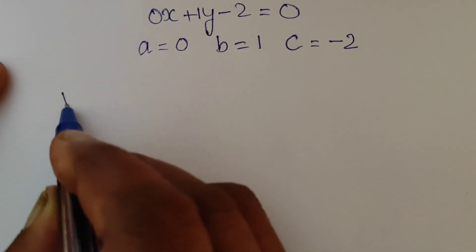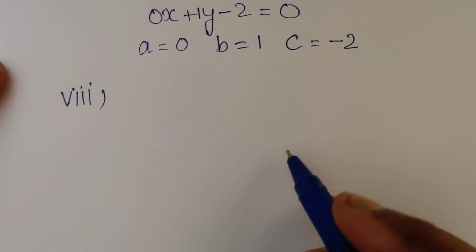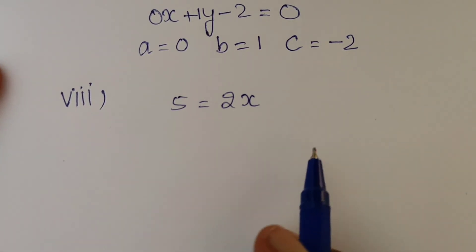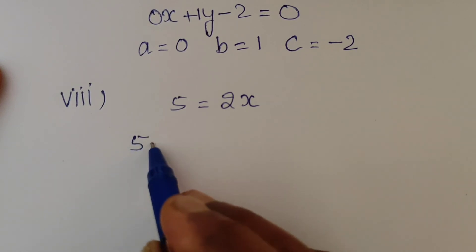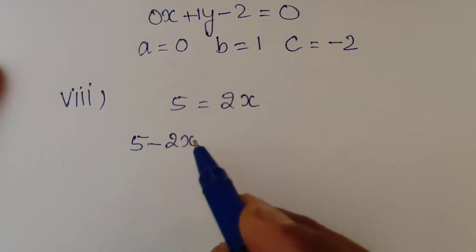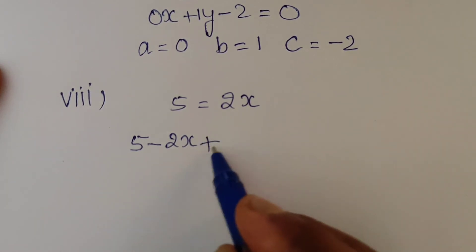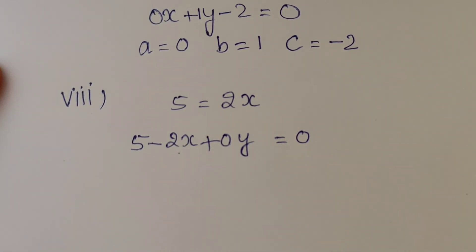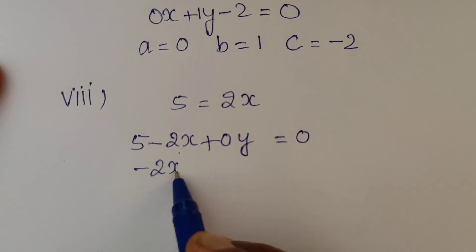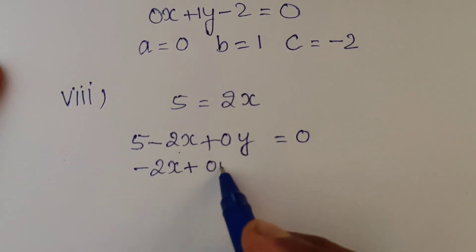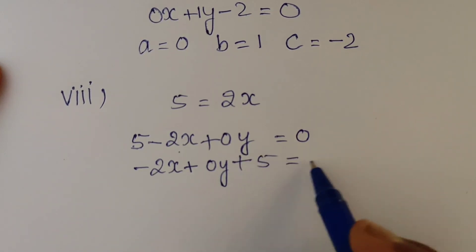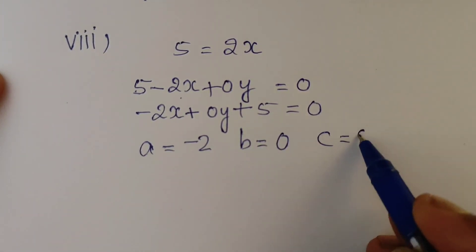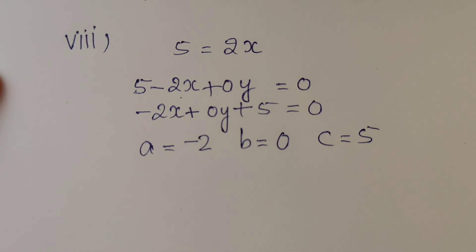Part (viii): 5 equal to 2x. Transposing 2x to the left-hand side, we get 5 minus 2x equal to 0. Since there is no y term, we write negative 2x plus 0y plus 5 equal to 0. Therefore, a is equal to negative 2, b is equal to 0, and c is equal to 5.